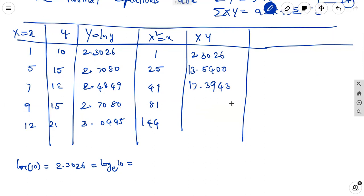Next xy, 9 into 2.7080 is 24.3720. 12 into 3.0445 gives the xy value. Now x squared values.